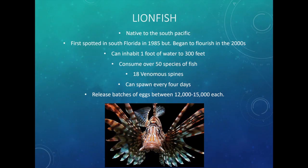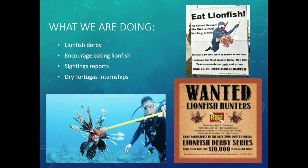The first invasive species is the lionfish. It's a really interesting-looking fish native to the South Pacific and Pacific Ocean. It was first spotted in South Florida in 1985 but really exploded in the 2000s. It's a popular aquarium fish because it looks so cool, but they get very big quickly and eat a lot. They can inhabit water from one foot to 300 feet deep, giving them a huge range that makes them even more successful as an invasive species.